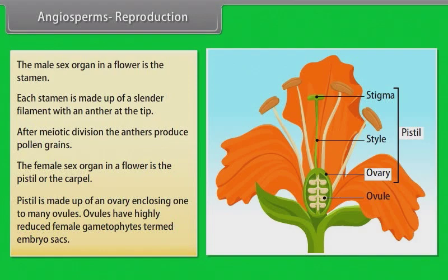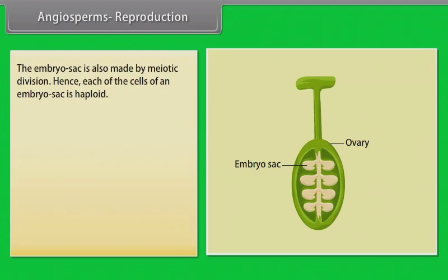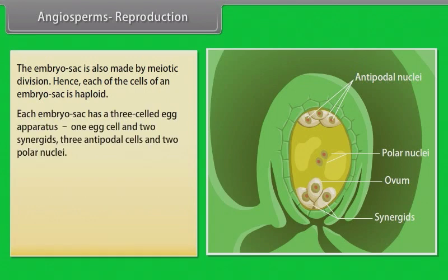Pistil is made up of an ovary enclosing one to many ovules. Ovules have highly reduced female gametophytes termed embryo sacs. The embryo sac is also made by meiotic division. Hence each of the cells of an embryo sac is haploid. Each embryo sac has a three-celled egg apparatus with one egg cell and two synergids, three antipodal cells and two polar nuclei.